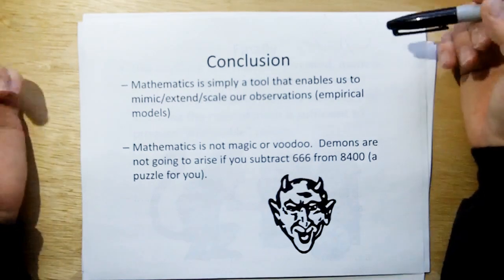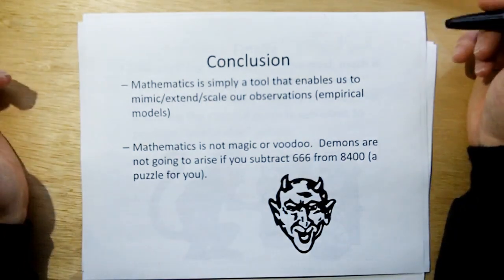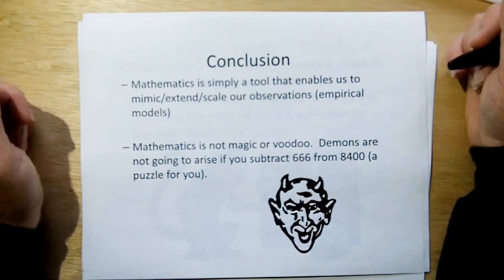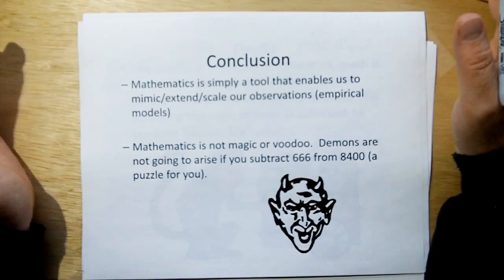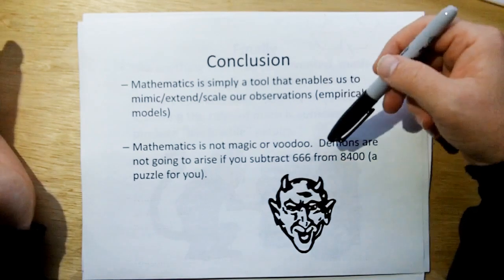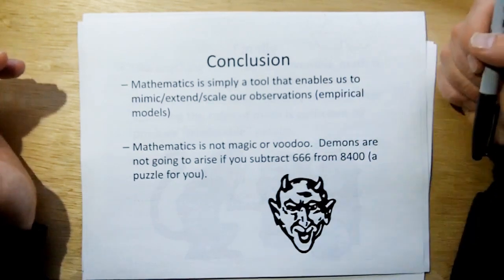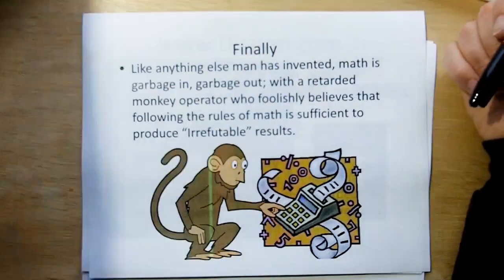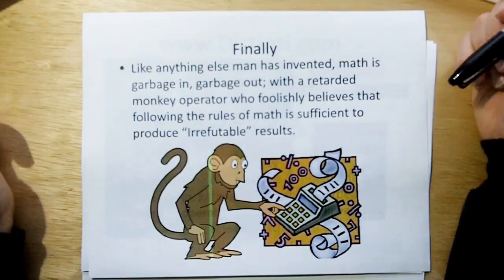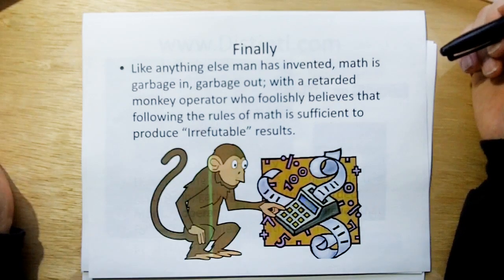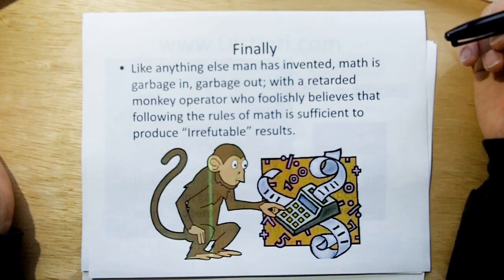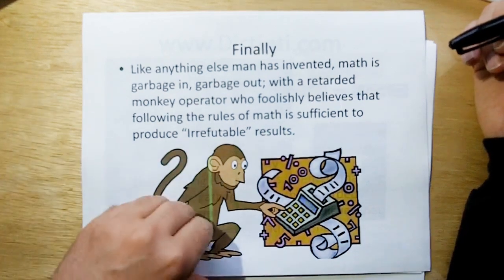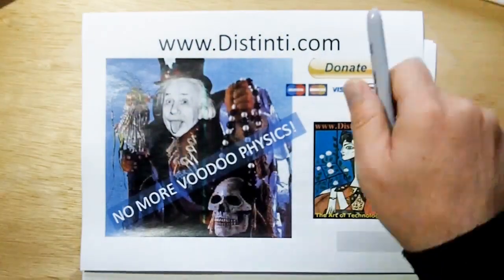So let's be careful. Mathematics is simply a tool that enables us to mimic, extend, and scale our observations, our empirical models. Mathematics is not magic or voodoo. Demons are not going to arise if you subtract 666 from 8400. And finally, like anything else man has invented, math is garbage in, garbage out with a retarded monkey operator who foolishly believes that following the rules of math is sufficient to produce irrefutable results. Thank you very much.